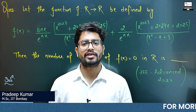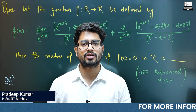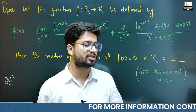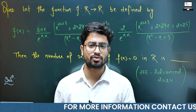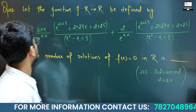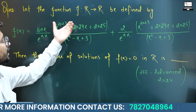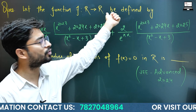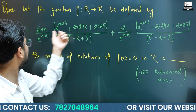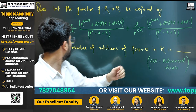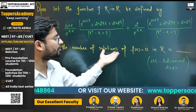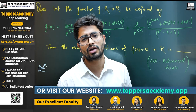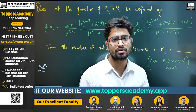Hello students, today we'll discuss one more question on your PYQs. This is the question from JEE Advanced 2024. You are given a function from real number to real number, and you have to find the number of solutions for which f(x) is equal to zero.